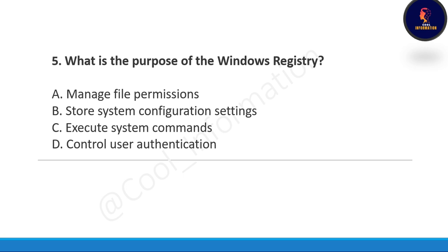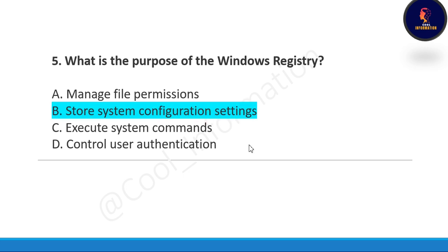Next question: What is the purpose of the Windows Registry? Option A: manage file permissions, Option B: store system configuration settings, Option C: execute system commands, Option D: control user authentication. The correct option is Option B, store system configuration settings.